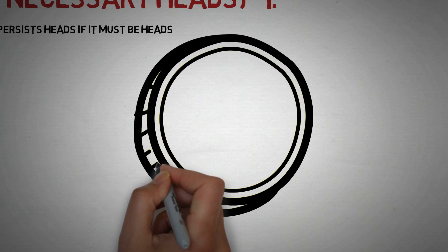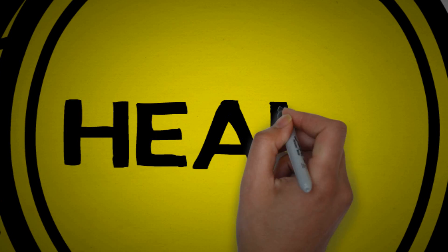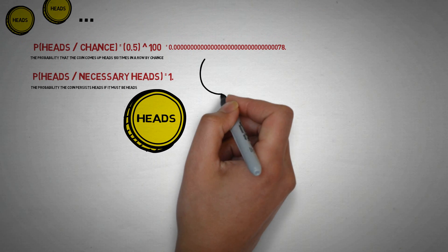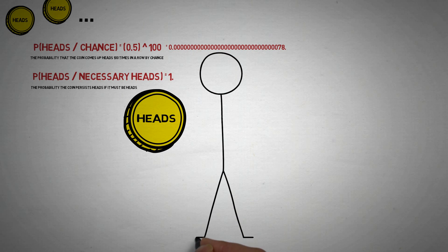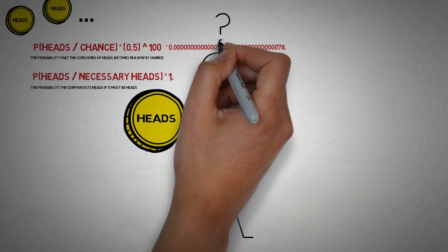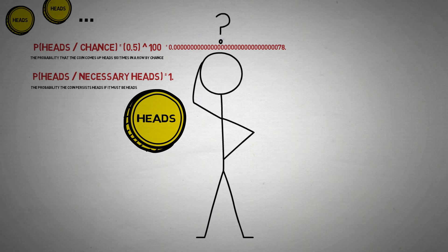The point here is that you don't have to actually observe that the coin is heads on both sides. The observation of persistence in coming up heads is itself sufficient to give you evidence against the brute unexplained heads.